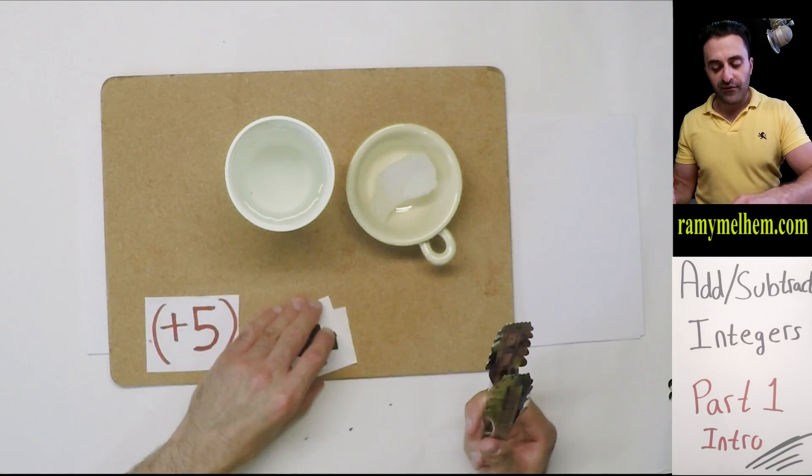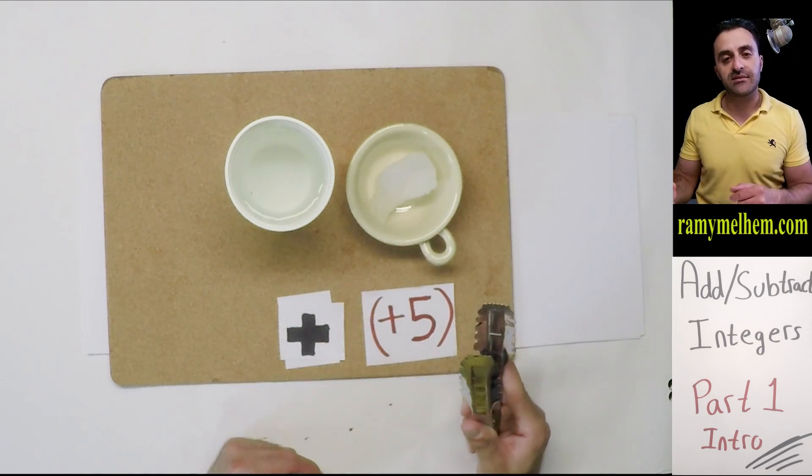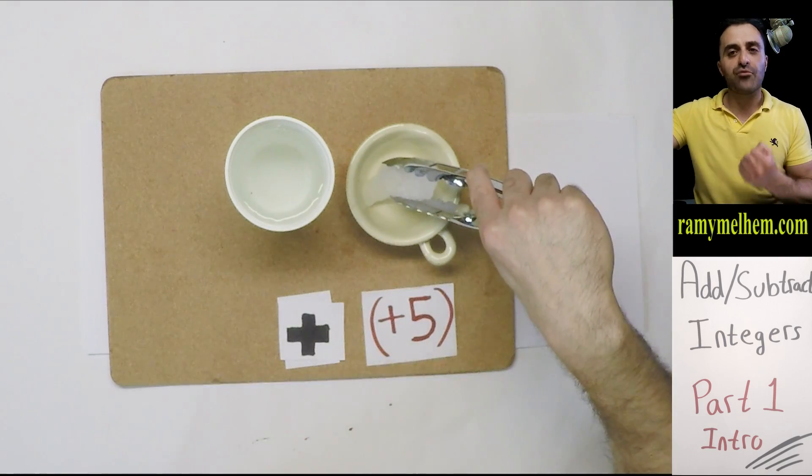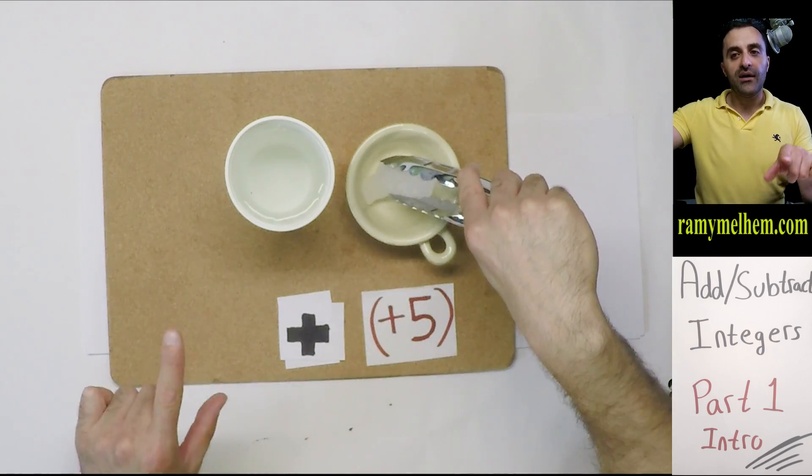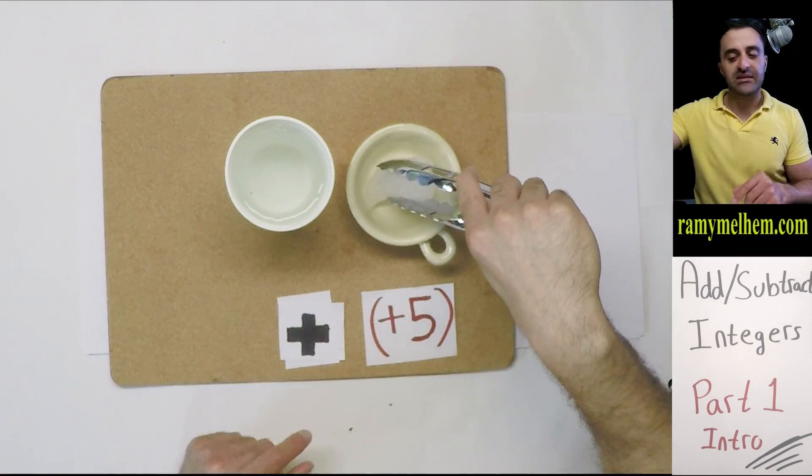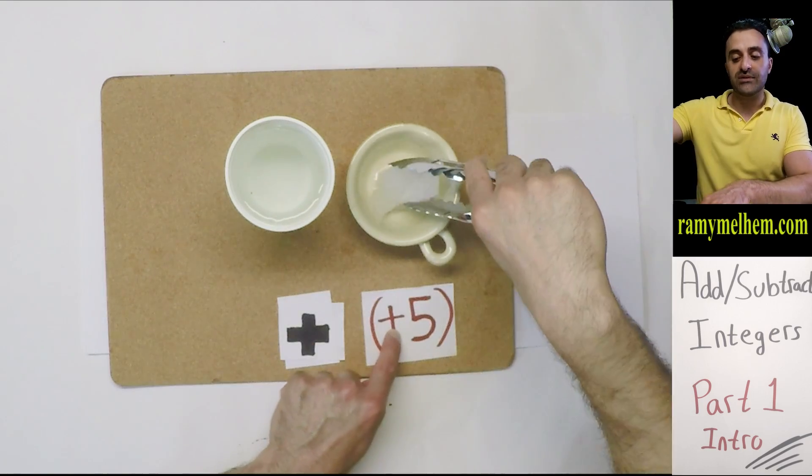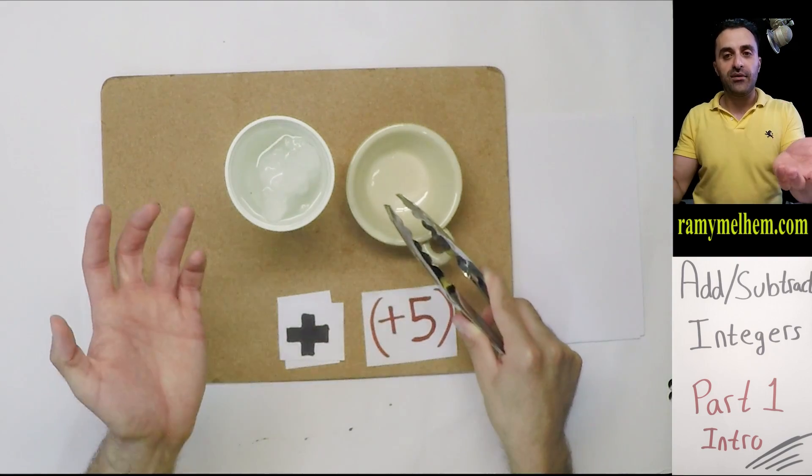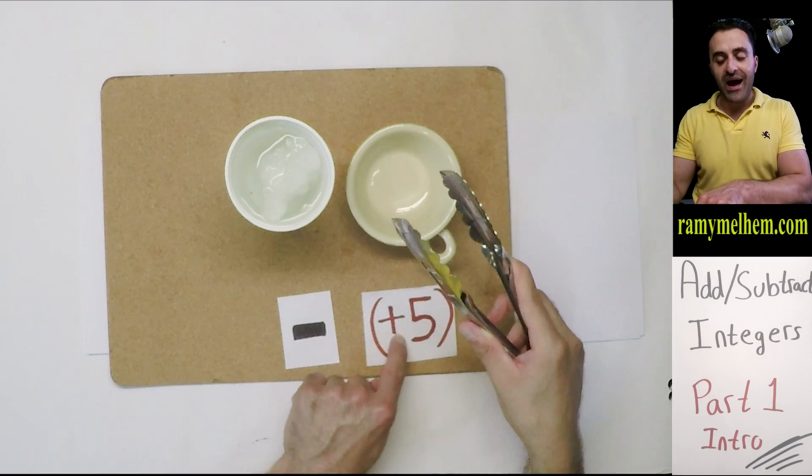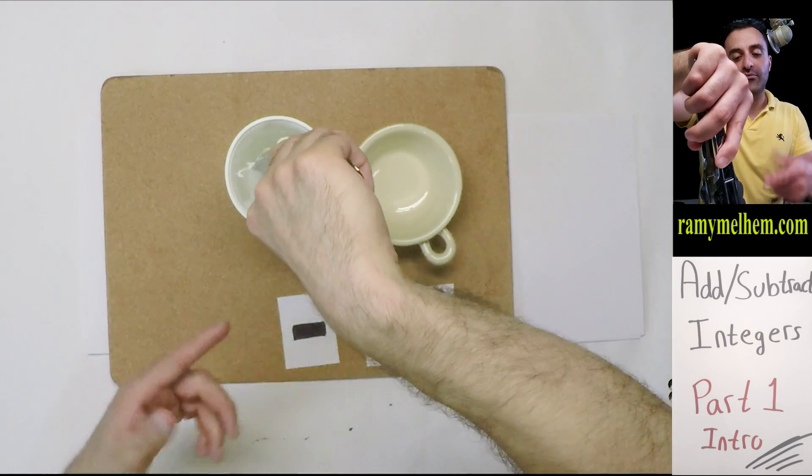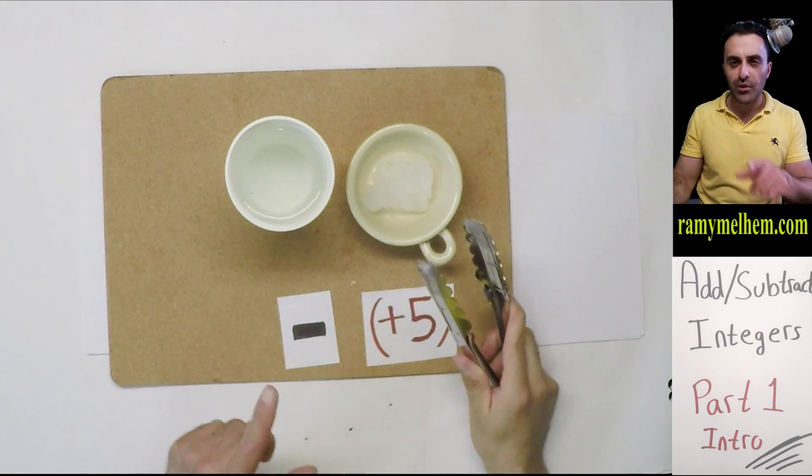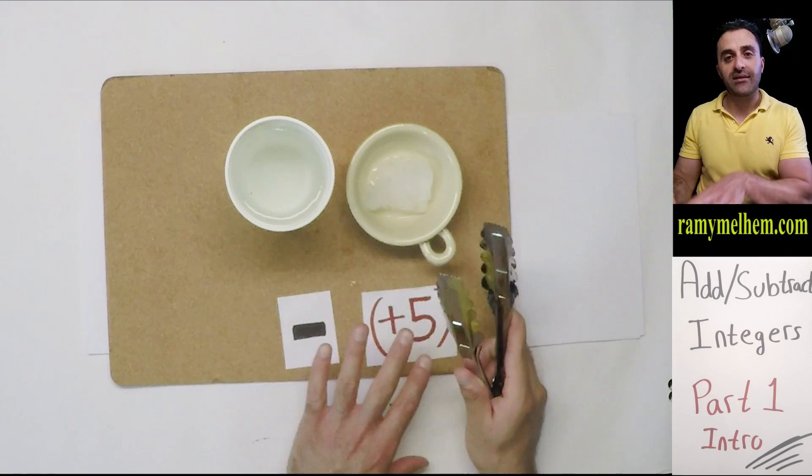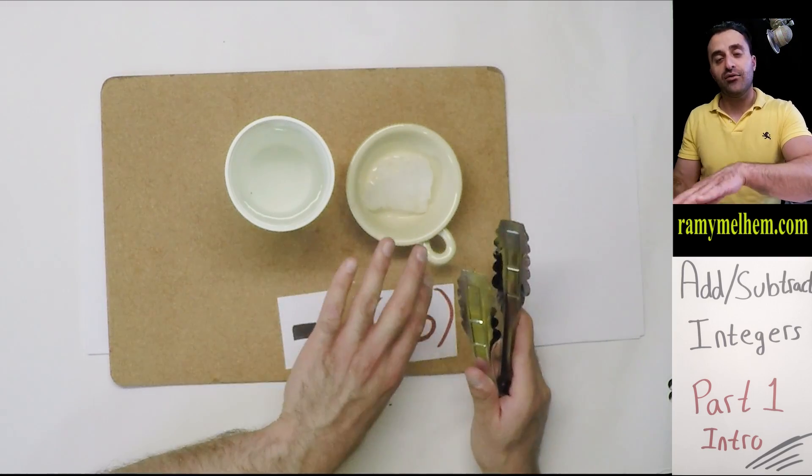Instead of negatives, what about adding positives? Positives are really hot numbers, so we symbolize them with hot fiery coal. If I add hot coal to water, that water is going to warm up. But if I subtracted hot coal, what would happen? It would get colder. We need to understand these four things: add ice, subtract ice, add hot coal, subtract hot coal, and the impact it has on the temperature.